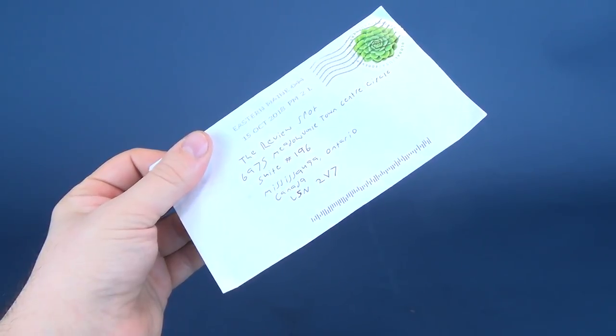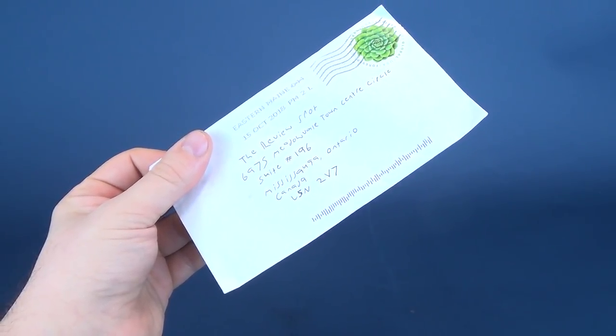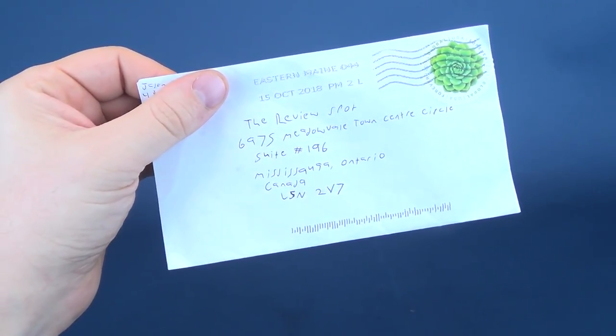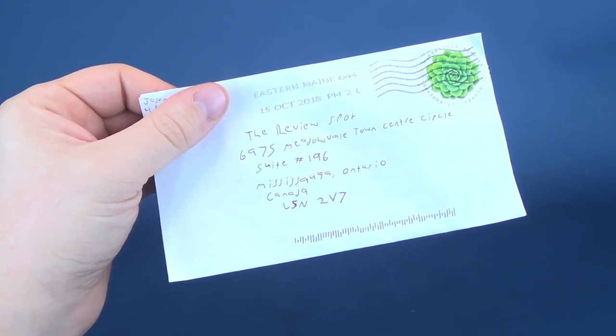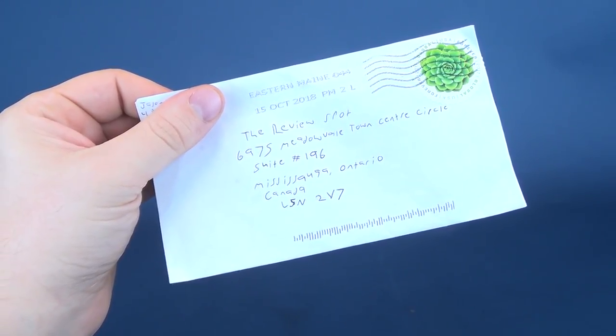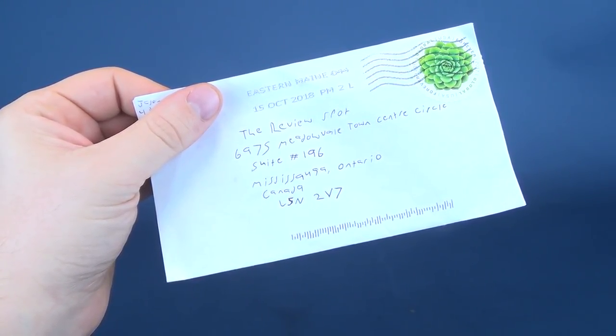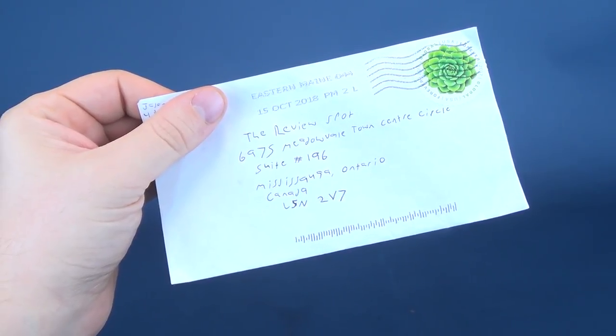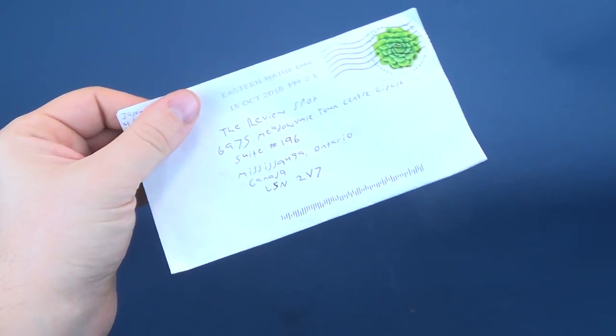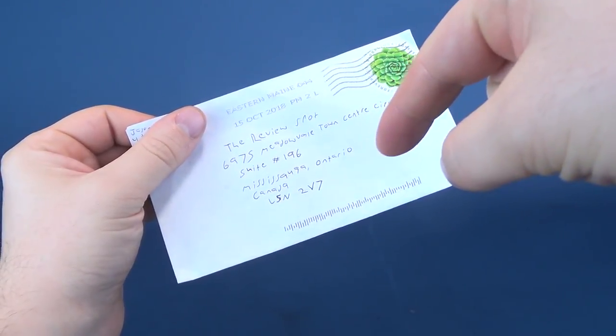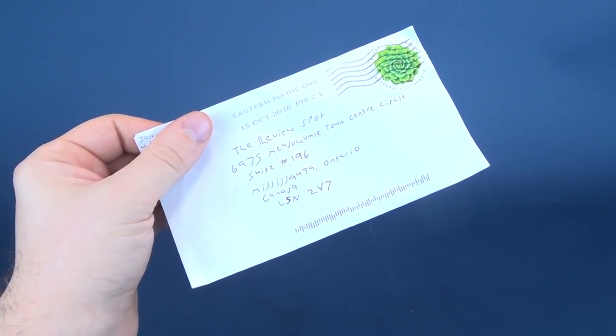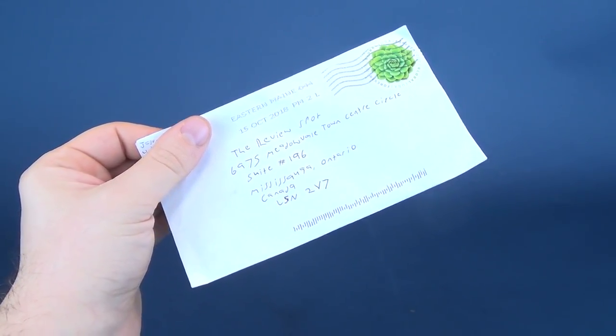If you guys would like to send anything my way, whether it be letters, drawings, something you'd like to see me review, there's the information right there. No, it's not my home address. That's the viewer's corner address. It's the review spot. 6975 Meadowville Town Center Circle Suite 196, Mississauga, Ontario, Canada, L5N2V7. Don't worry, I'm also gonna put the information down below as well, so if you weren't able to write that all down in quick enough time, all that information will be down below.